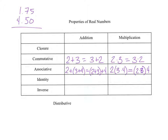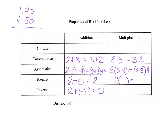Identity is where a number keeps its identity. What can you add to 2 so that it's still 2? If you add zero, you'll still get 2 — that's the identity. The inverse for addition says: what could you add to 2 to get to the identity of zero? That would be negative 2. For multiplication, what do you multiply times 2 to keep its identity? That would be 1. And the inverse is what you multiply times 2 to get back to the multiplicative identity of 1 — that would be the reciprocal, one half.